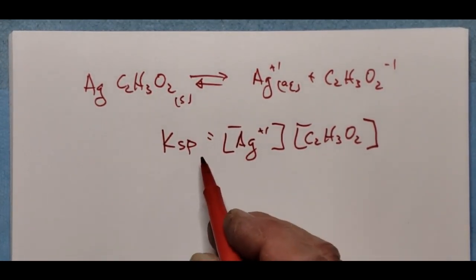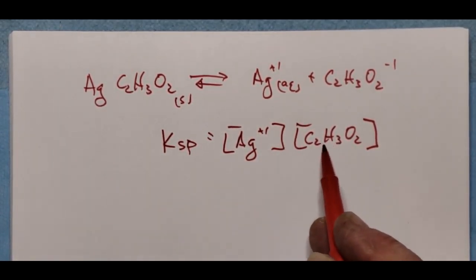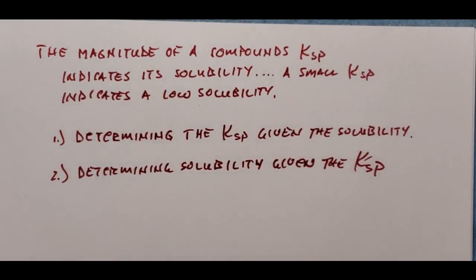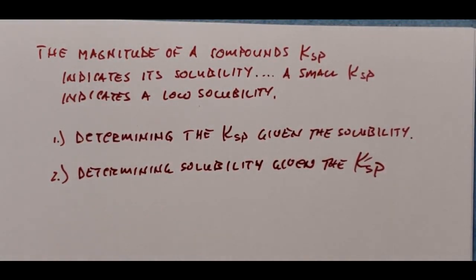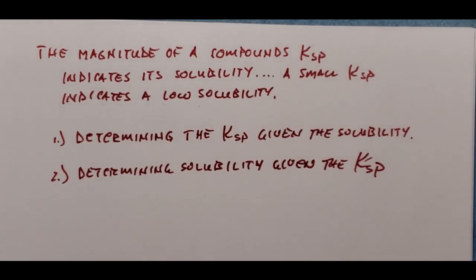In today's lab, we'll create a saturated solution of silver acetate, analyze for the molarity of the silver and the acetate, and experimentally determine the Ksp for silver acetate. Just like in the past, the magnitude of an equilibrium constant indicates the position of equilibrium — a large Ksp favors the product side, while a small Ksp indicates low concentrations of the ions on the dance floor and consequently a low solubility.